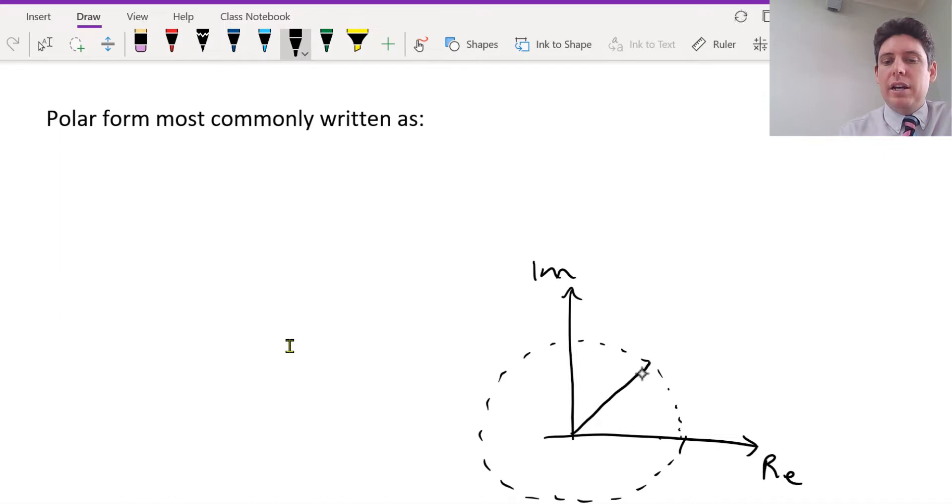So this here is what of the circle? The radius. So the modulus of the complex number, the length of the complex number, is often denoted as r.